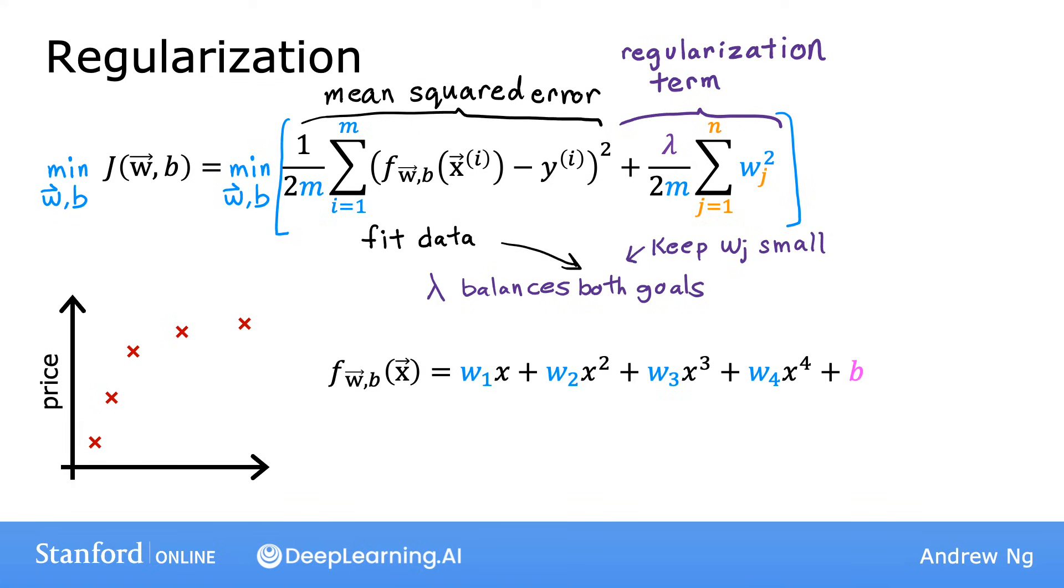Let's take a look at what different values of lambda will cause your learning algorithm to do. Let's use the housing price prediction example using linear regression. So f of x is the linear regression model. If lambda was set to be zero, then you're not using the regularization term at all because the regularization term is multiplied by zero. And so if lambda was zero, you end up fitting this overly wiggly, overly complex curve and it overfits.